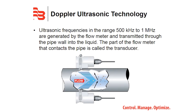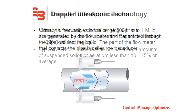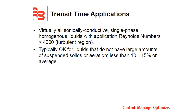Ultrasonic frequencies in the range of 500 kilohertz to one megahertz are generated by the flow meter and transmitted through the pipe wall into the liquid. The part of the flow meter that contacts the pipe is referred to as the transducer. Applications for transit time flow technology are virtually all sonically conductive, single-phase, homogeneous liquids.